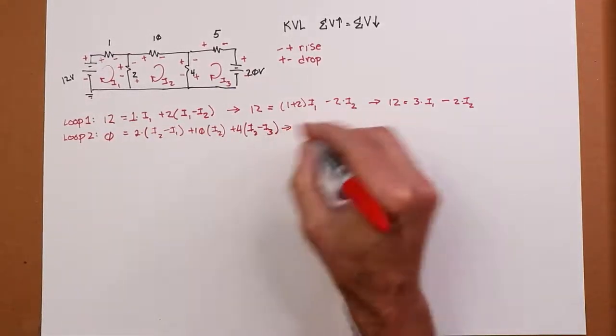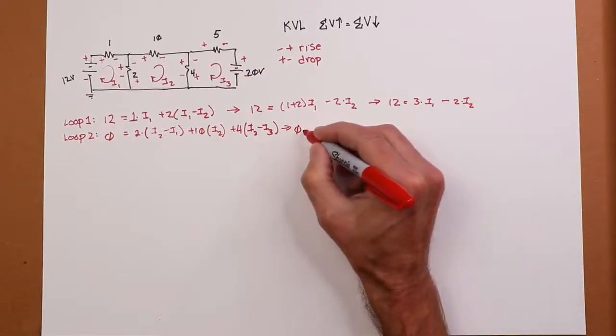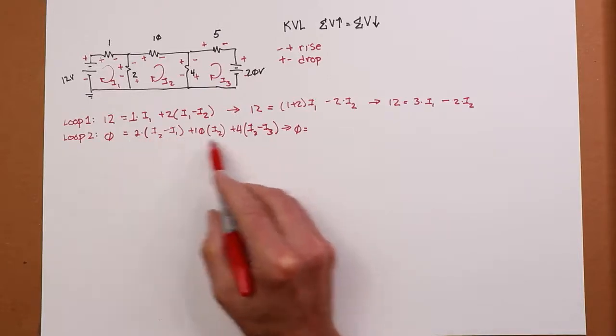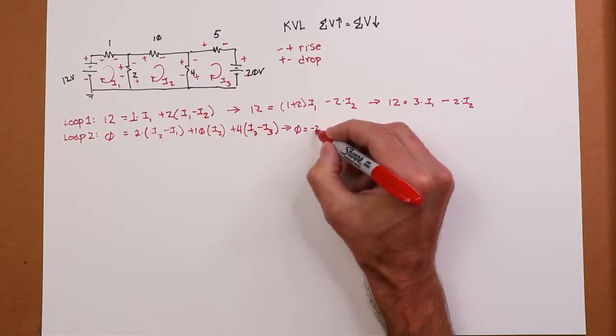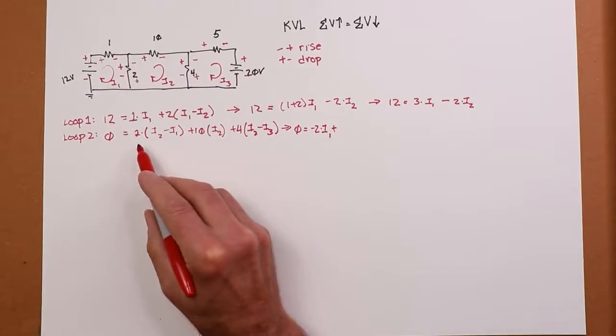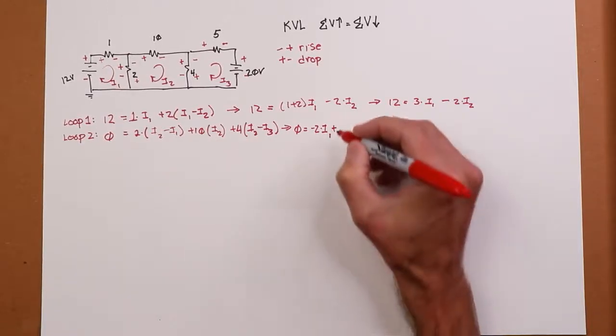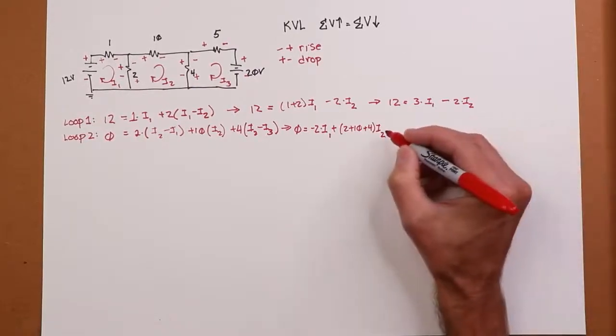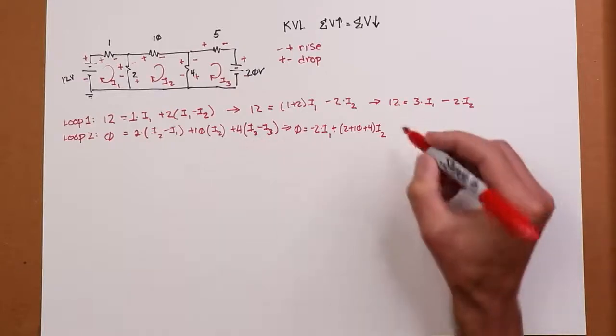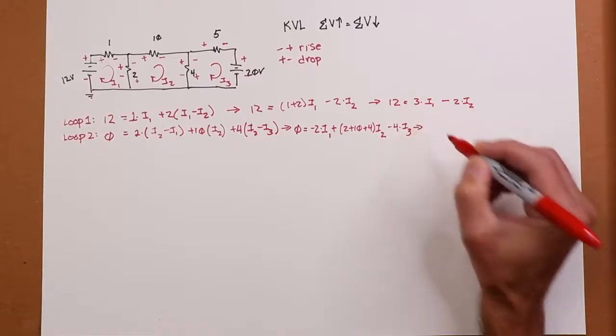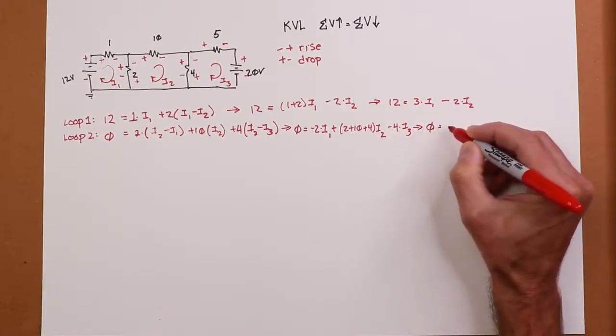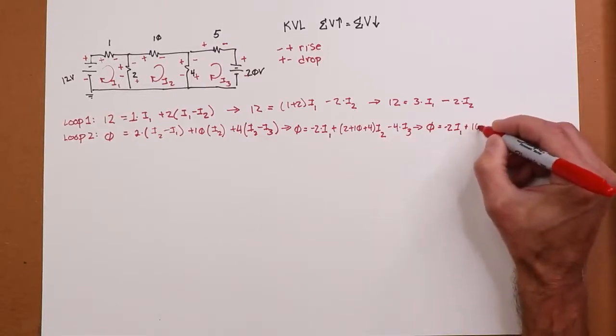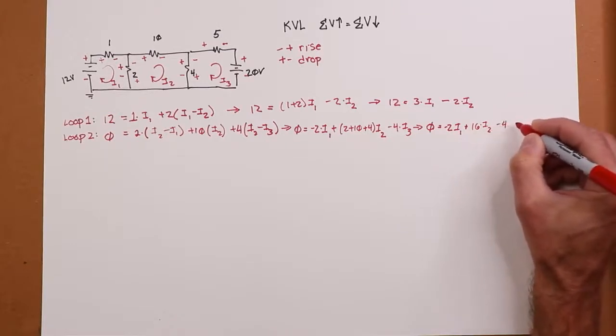Then we have the 4 ohm resistor. The current flowing through that is a pair of currents. We're in loop I2, so it's I2 minus the I3. I3 is negative with respect to the direction of I2. Same deal. Let's collect up some terms here. I've got my 0. In terms of my I1's, I see a negative 2 over there. I2's, we've got a 2, got a 10, got a 4. And then we also have an I3 term - we have the 4. So, we've got 0, negative 2 I1, 16 for the I2, and negative 4 for the I3.